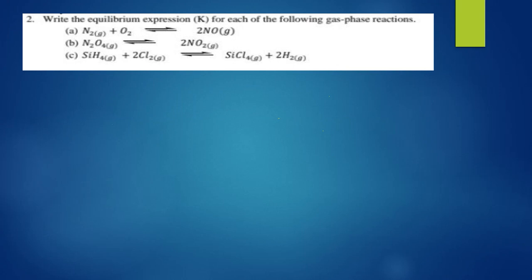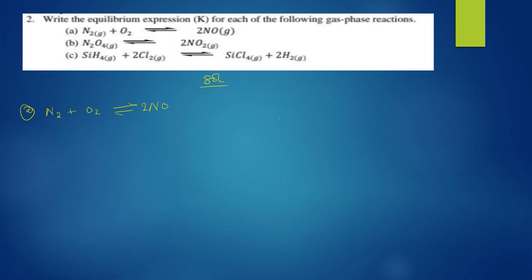For question two, write the equilibrium expression K for each of the following gas-phase reactions. To write equilibrium expressions, you need to understand what the equilibrium constant is. The equilibrium constant is the ratio of the equilibrium concentrations of the products over the equilibrium concentrations of the reactants, each raised to their stoichiometric coefficients.